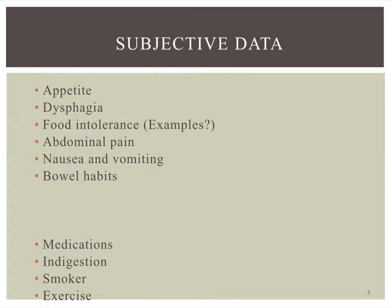We move into subjective data next. These are just some of the questions and things you can ask the patient. What is their typical appetite? What have they been eating now if there has been a decrease? Dysphagia is trouble swallowing. Food intolerances — like gluten or dairy. Finding out about the pain — you can use COLDSPAN for any type of pain, or for nausea and vomiting, like when it's occurring after certain foods or certain times of the day. What are their typical bowel habits and what's been going on recently?